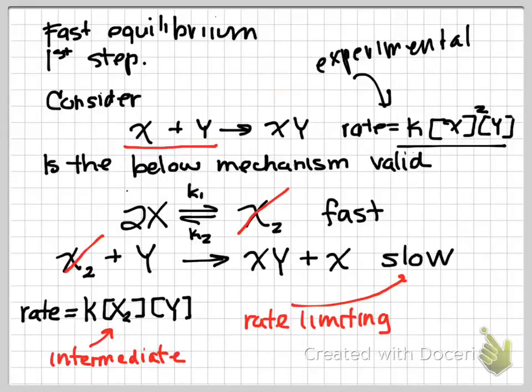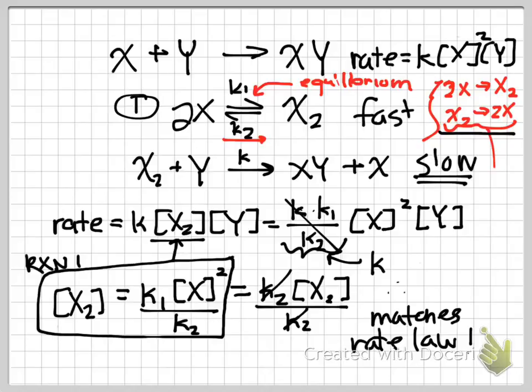If we go back and we look, that's our experimental rate. That is what we show based on the mechanism. So it checks out, and that solves your problem.